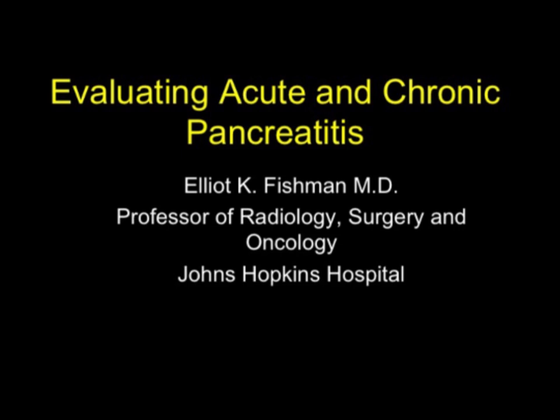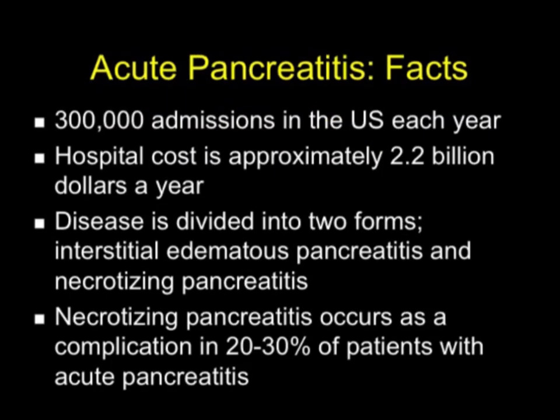Acute pancreatitis is something we evaluate on a routine basis in all of our hospitals, particularly through the ER setting, and then if patients have complications, we end up seeing them in the hospital setting. There are over 300,000 admissions each year in the United States and the cost is over $2 billion. When you think about acute pancreatitis, we divide the disease into two forms: interstitial edematous pancreatitis and necrotizing pancreatitis. Necrotizing pancreatitis occurs as a complication in up to 30% of patients with acute pancreatitis.